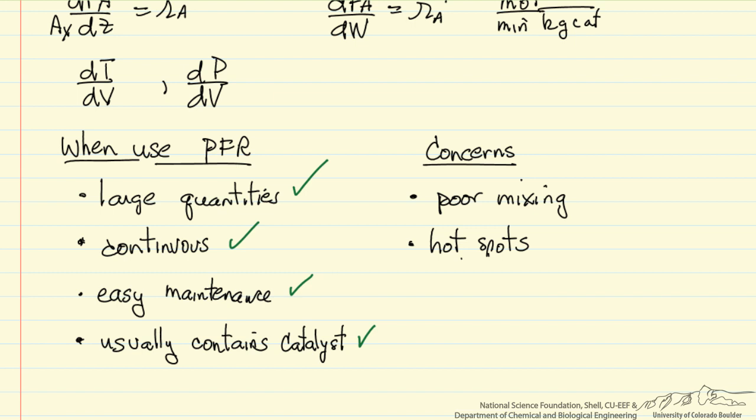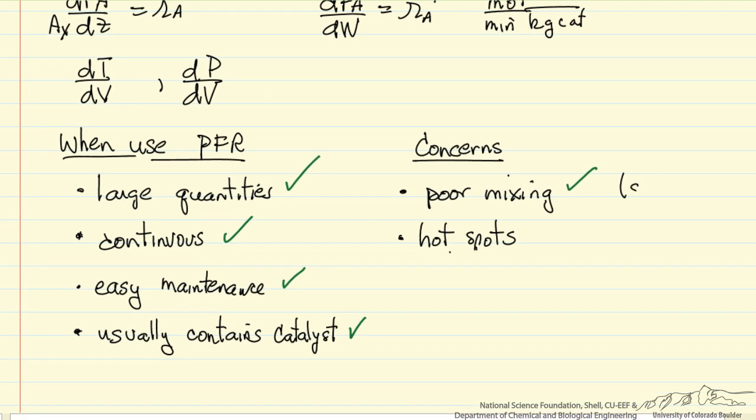Now the fact there are no moving parts also means that mixing can be poor. This may be a concern depending on the particular process, and sometimes we can get around that by having static mixers in the plug flow reactor. But certainly the catalyst causes mixing much more so than a tubular reactor without catalysts.